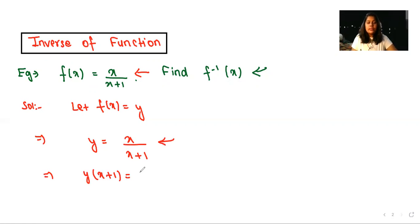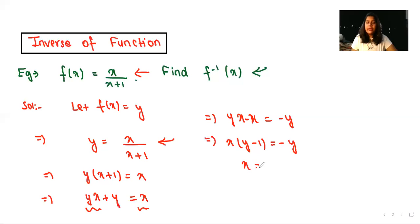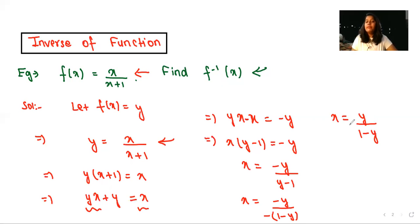We do cross multiplication: y(x + 1) = x, which expands to yx + y = x. Since we need to write in terms of x, we bring all x terms together: yx − x = −y. Taking x common: x(y − 1) = −y, so x = −y / (y − 1). Taking negative common from the denominator, this becomes x = y / (1 − y).